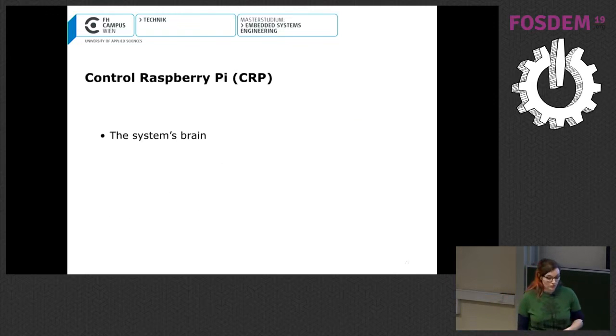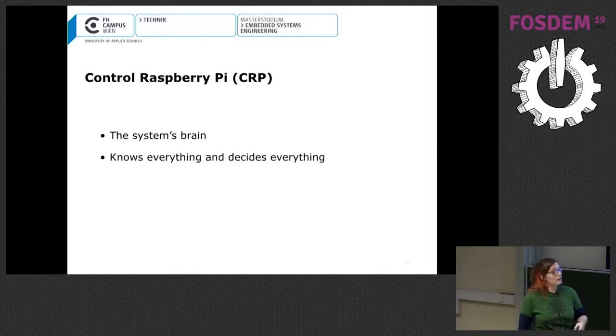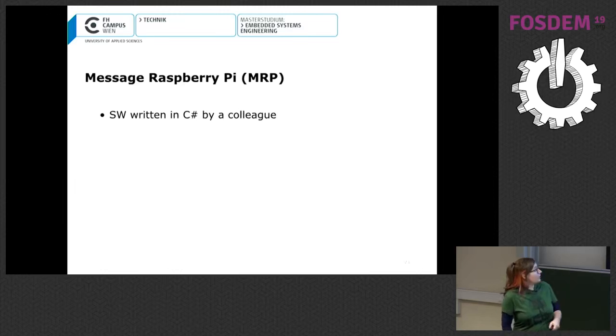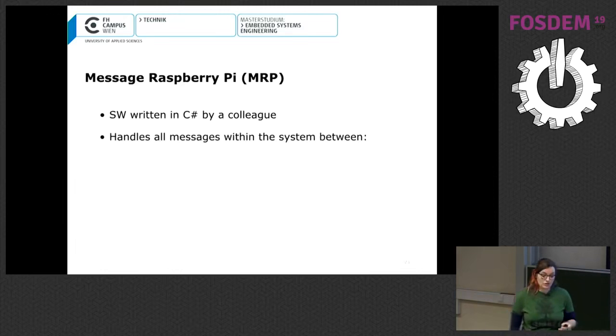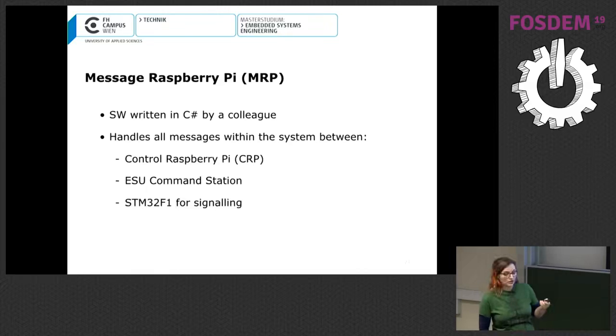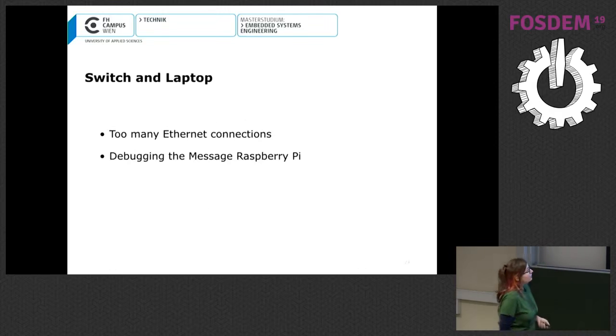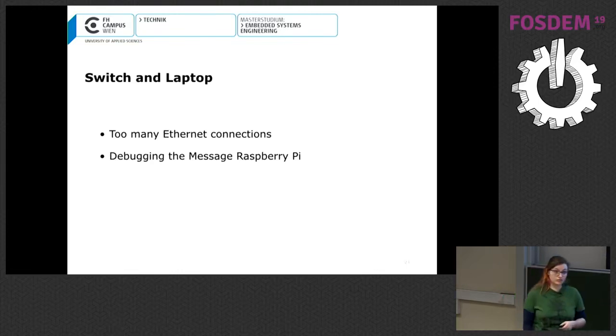We have control Raspberry Pi, which is the system's brain. It knows everything, it decides everything, and the software is written in ADA, why I'm here today. I will talk about it in detail later. Then we have the message Raspberry Pi. The software is written in C-Sharp, also by a colleague of mine. It handles all the messages inside the system between the control Raspberry Pi, the ASU command station, the STM32, and the push buttons. Then we have a switch, because I had a lot of Ethernet connections, and a laptop to debug the message Raspberry Pi and start the server application, because there was no screen attached to both Raspberry Pis.